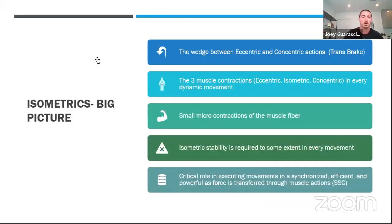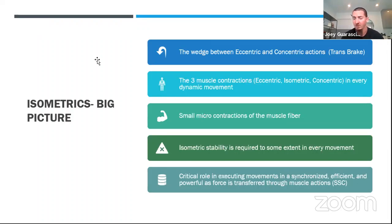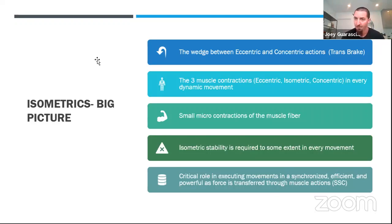It's the wedge between eccentric and concentric actions — the bridge between that eccentric lengthening and that concentric shortening, or how I think of it: absorbing force to create a propulsive force. We might think muscles aren't producing micro contractions in a locked position, but they are. The sliding filament theory is still in play — there are just smaller muscle contractions occurring.